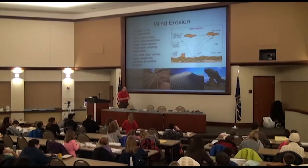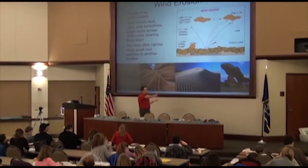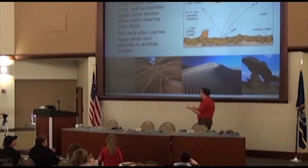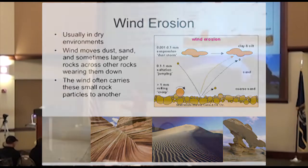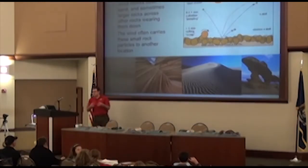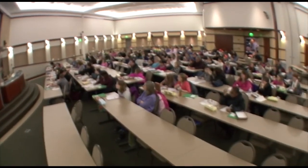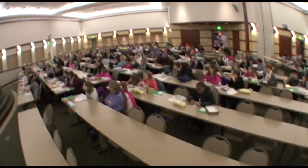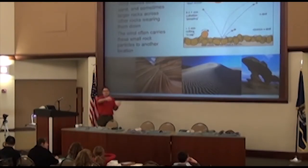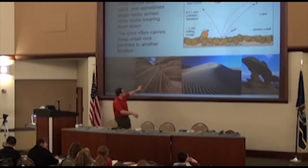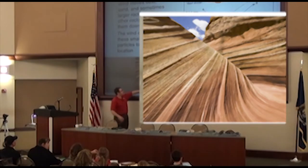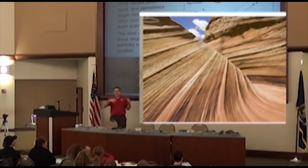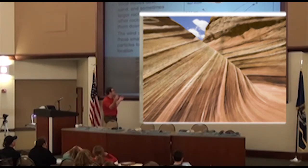Wind erosion is where the wind actually picks up and moves particles of rocks or soil and drags them from one place to another. It separates out different sizes — it can only move dust or little sand pieces, usually can't move a giant boulder. As it does that, it sometimes scratches across other rocks, forming canyons. I think this is Bryce Canyon, with streaks worn down from sand being blown across it for tens of thousands of years.